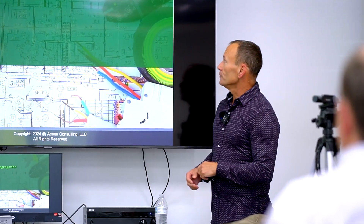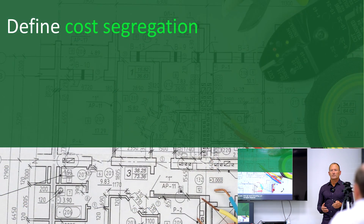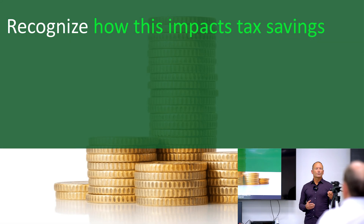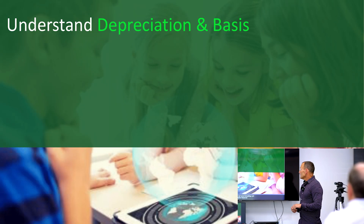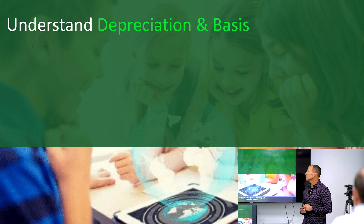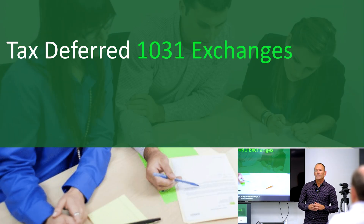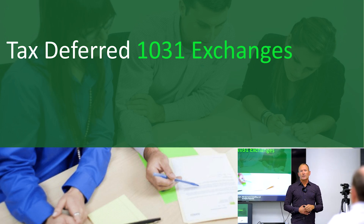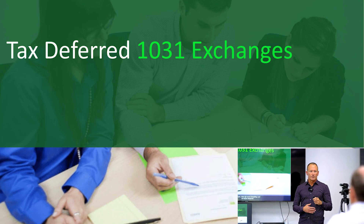Whenever I do presentations, we go through program objectives — really just the things you'll hopefully take away when we're done. Today we're going to define cost segregation — that'll take literally 30 seconds. Then we'll spend the next 45 to 50 minutes explaining what that means. We'll cover how you save money using cost segregation, the concept of depreciation, which is the key behind all the cost seg work we do, and then something called a 1031 exchange.